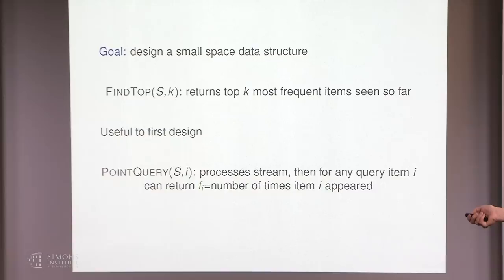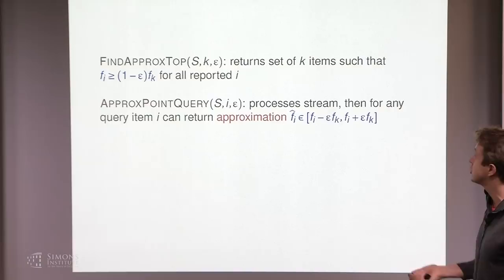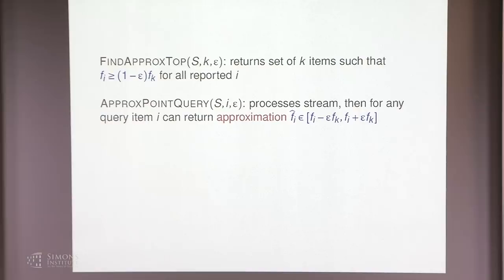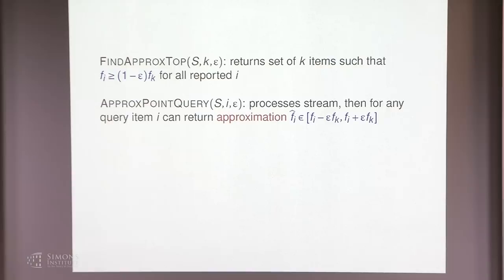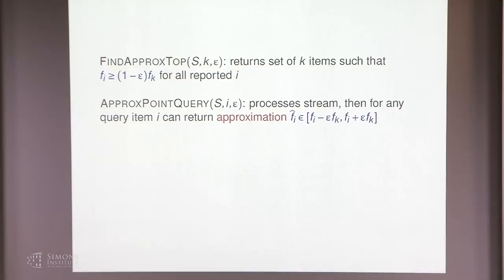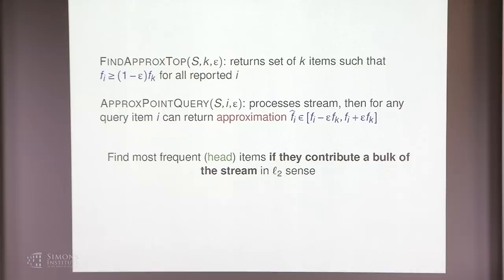Every time an item arrives, we could ask this primitive how many times it arrived so far. We're interested in designing approximate versions of these primitives because they can be implemented in a small amount of space. We want to return the top k most frequent items approximately — those whose frequencies are not substantially smaller than the k-th most frequent item — and we want an approximate point query primitive that has some bounded error.